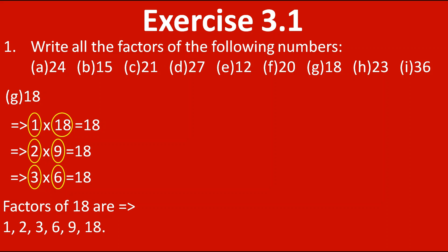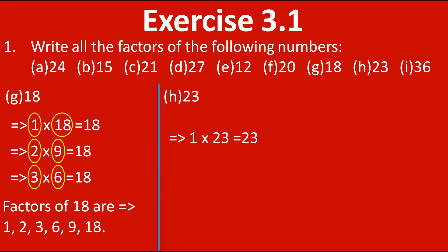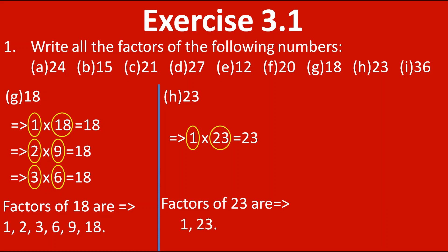Next is 23. Starting from 1: 1 into 23 gives us 23. Next we won't find 23 in any other table, as it is a prime number. Therefore the factors of 23 are only 1 and 23. Such numbers which we won't find in other tables are called prime numbers — we will learn more about this in the next video.